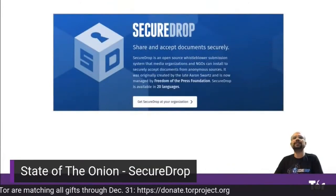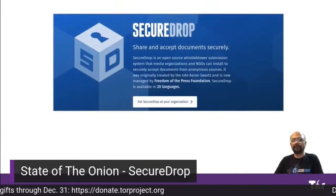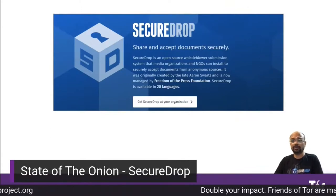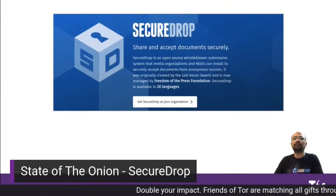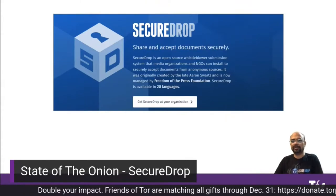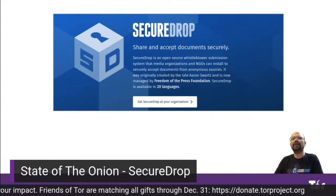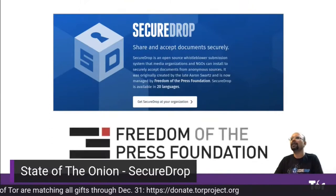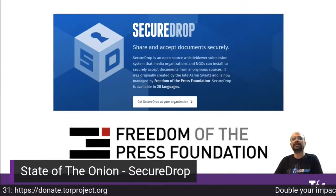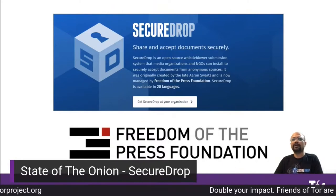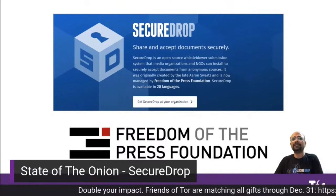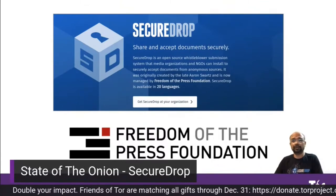SecureDrop is an open source whistleblower platform which has been deployed over 70 news organizations and NGOs across the globe. It was originally created by the late Aaron Swartz and is now maintained by the Freedom of the Press Foundation, a non-profit based in the USA where we protect, defend, and empower public interest journalism in the 21st century.